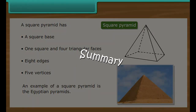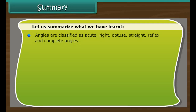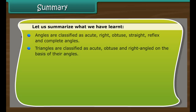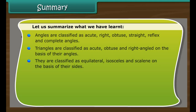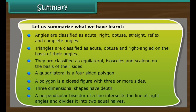Summary: Angles are classified as acute, right, obtuse, straight, reflex, and complete angles. Triangles are classified as acute, obtuse, and right-angled on the basis of their angles, and as equilateral, isosceles, and scalene on the basis of their sides. A quadrilateral is a four-sided polygon. A polygon is a closed figure with three or more sides. Three-dimensional shapes have depth. A perpendicular bisector of a line intersects it at right angles and divides it into two equal halves.